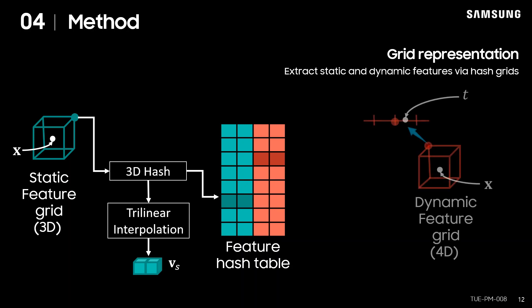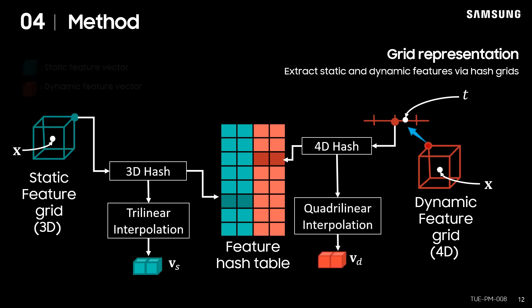Similarly, given the 4D query point X and T, the adjacent 16 grid points are selected and quadrilinear interpolation is performed to extract dynamic features. Here, we illustrated only a single level, but the final feature vector is the concatenation of features from all levels.